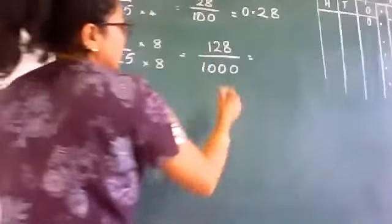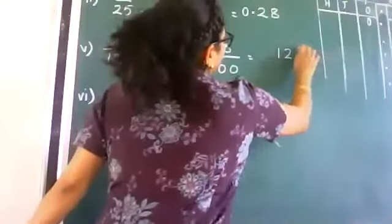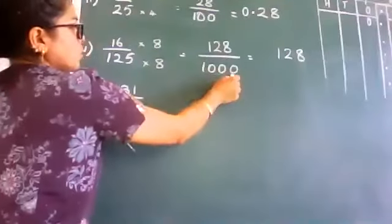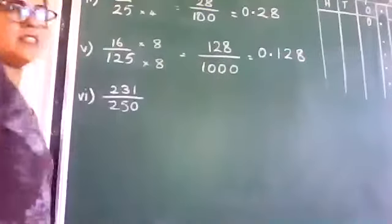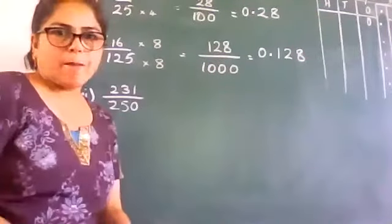Now how do you write this as a fraction? Sorry, as a decimal number. You write the numerator. Now 3 zeros. So we want 3 digits after the point. You already have 3 digits. So just put the point before the number.